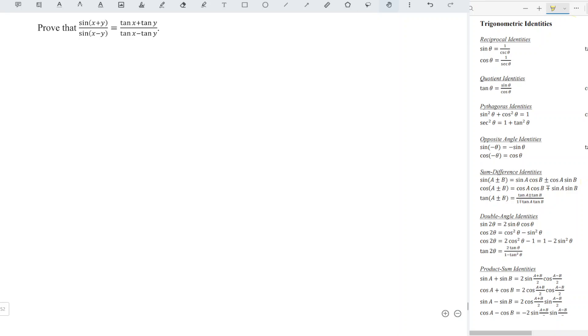Today I'd like to share the proof of this trigonometric identity. The left-hand side is equal to sine of x plus y divided by sine of x minus y. We can apply the sum-difference identity and rewrite